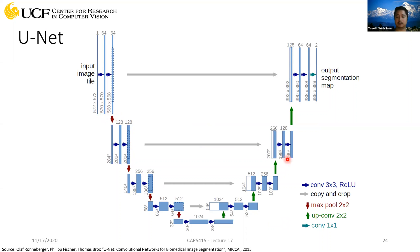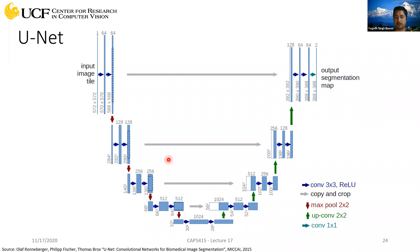Since U-Net doesn't maintain resolution during convolution, the shape of activation maps in the decoder differs from the encoder. For example, if the starting resolution is 284, and no padding is used, after convolution it becomes 282, then 280 — so it doesn't match the encoder. But if you maintain resolution by using a padding of one, then the resolution stays at 284 through all three layers. After downsampling and upsampling, you get back to 284, and then you can directly concatenate those encoder features without needing to crop.